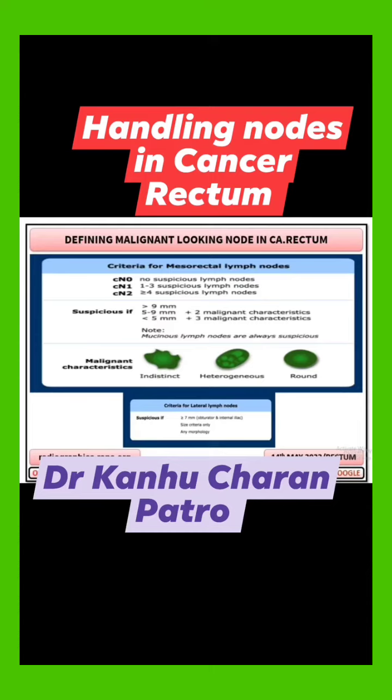Nodes less than 5 mm require all 3 malignant features to be taken as positive. All mucinous nodes, whatever the size and shape, are taken as positive.